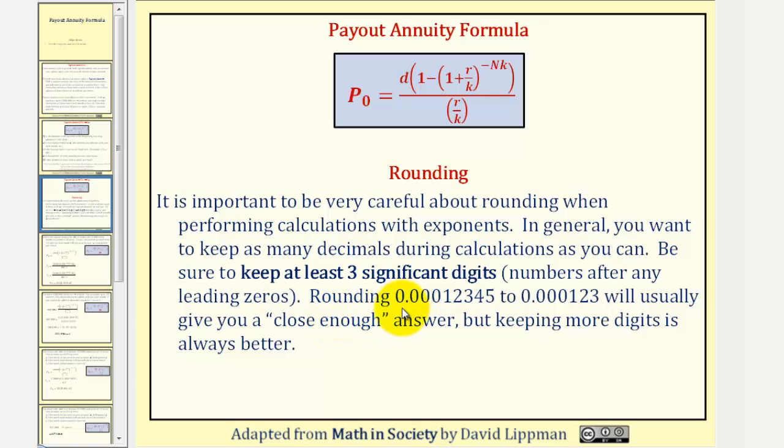For example, if we were rounding 0.00012345, we would round to 0.000123. This number has three significant digits. This will usually give a close enough answer, but keeping more digits is always better.